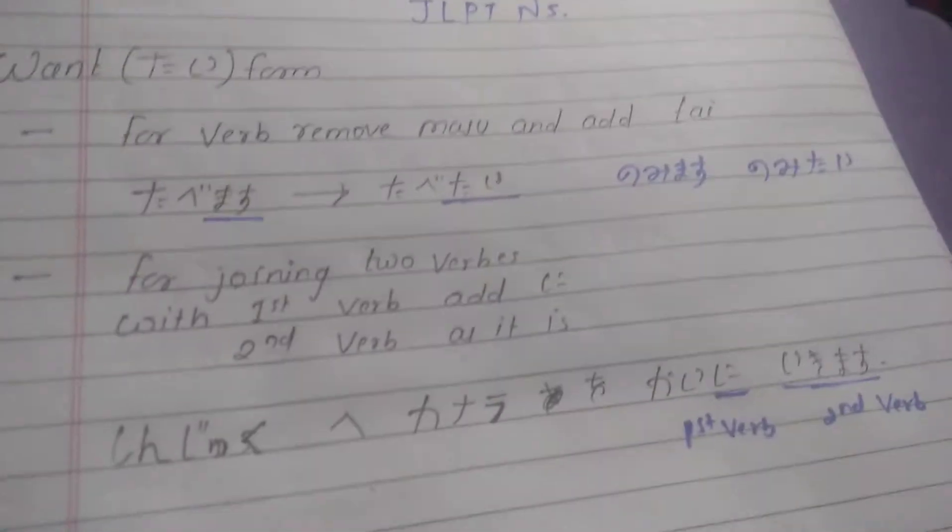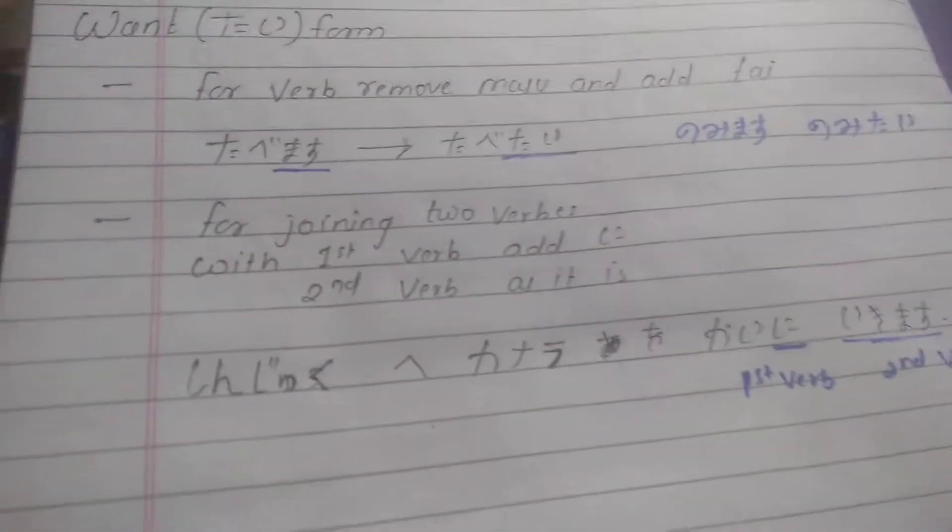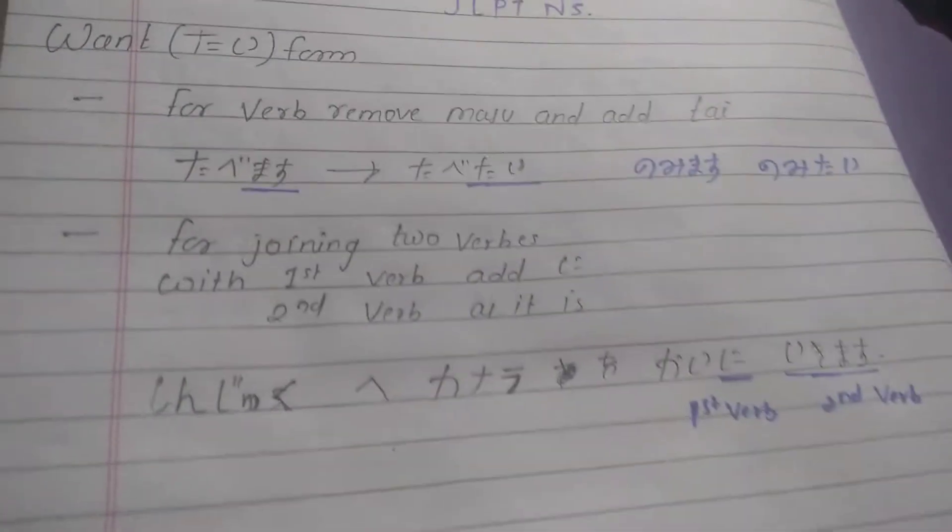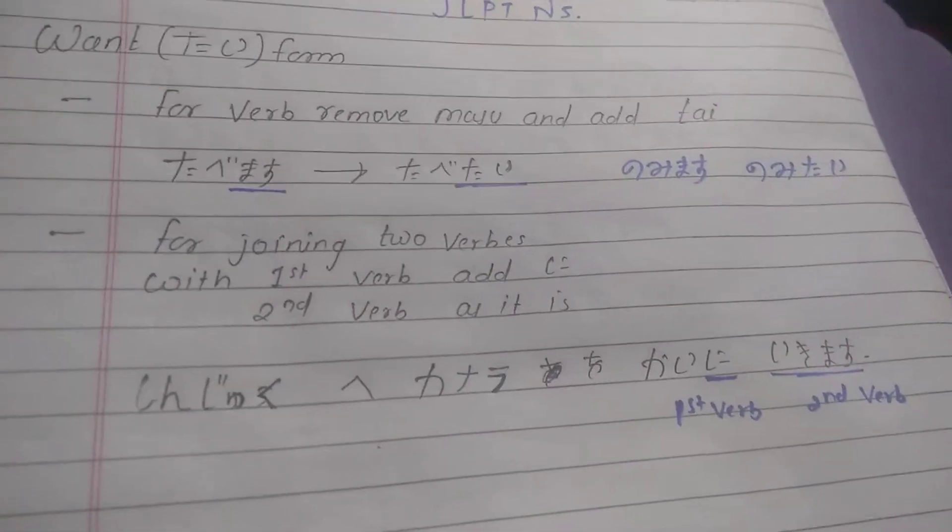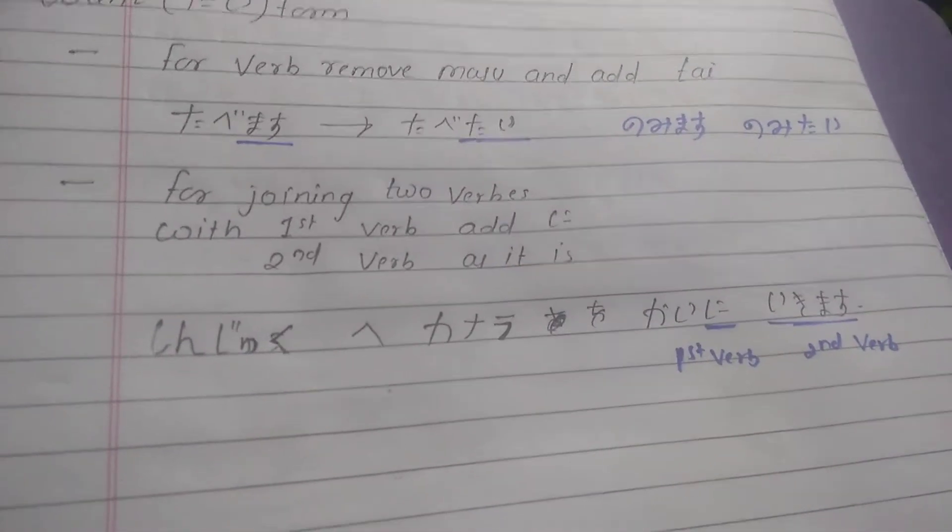For example, tabemasu (eat) becomes tabetai (want to eat). Nomimasu will become nomitai - nomimasu means drink and nomitai means want to drink.